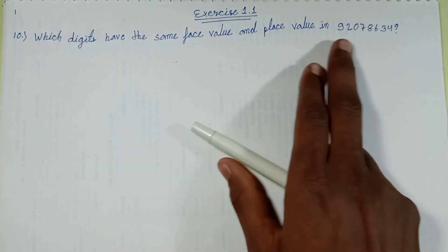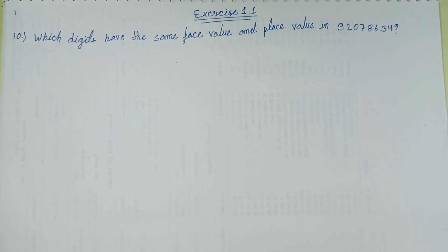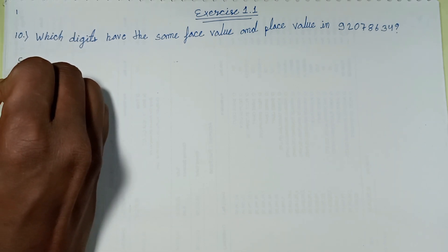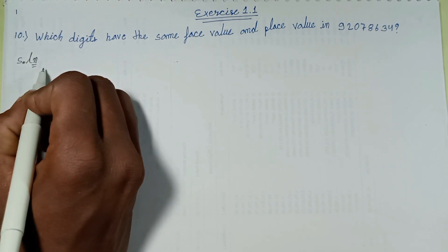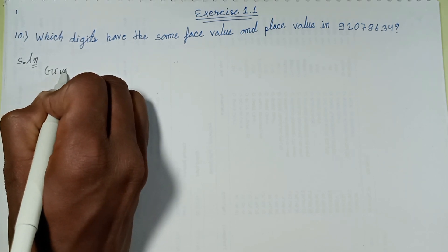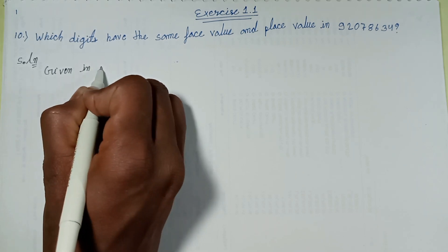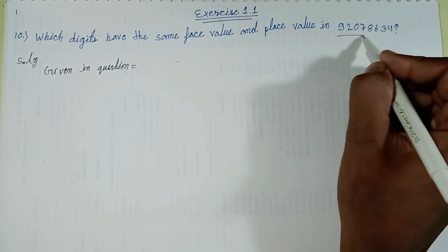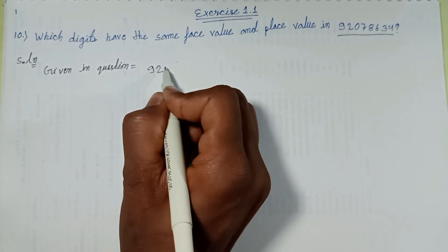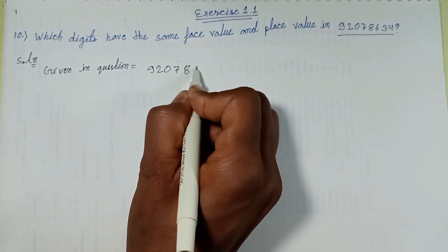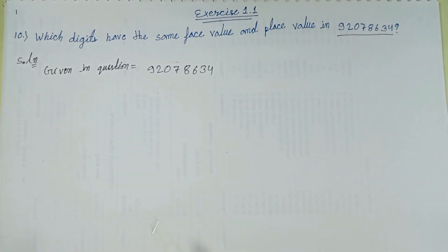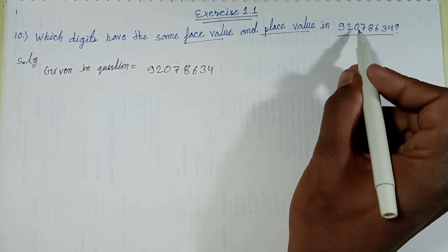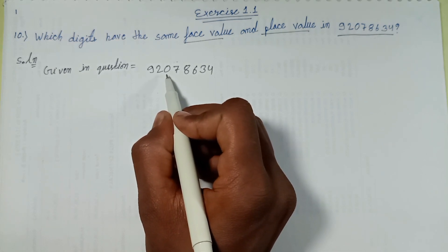Let's solve this problem. Solution: Given in question, this number: 92078634. Face value and place value. Let's find face value of zero. Face value of zero equals zero.